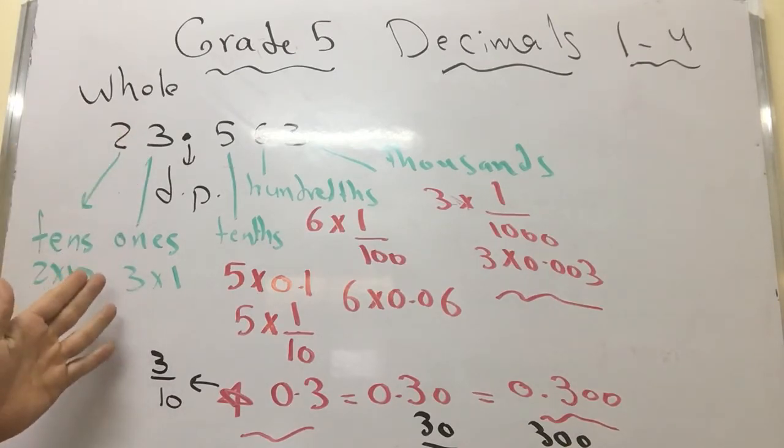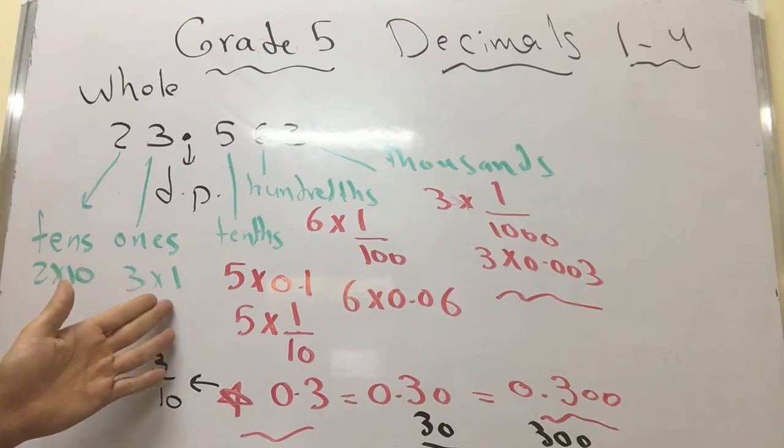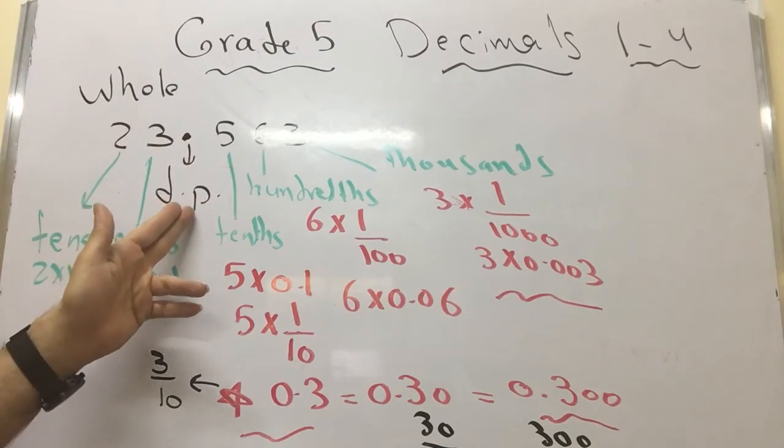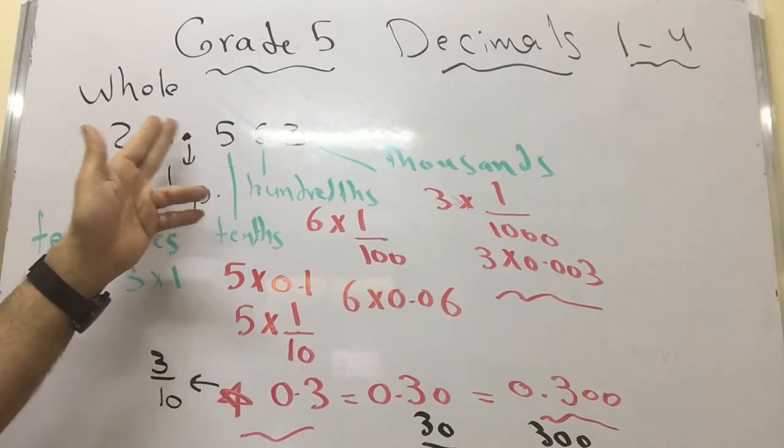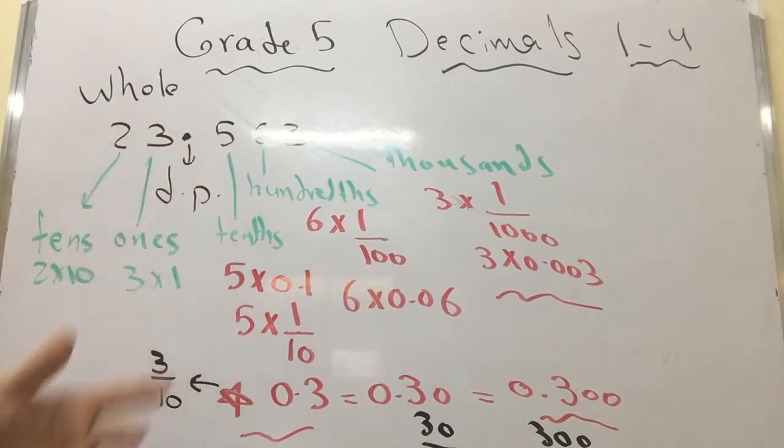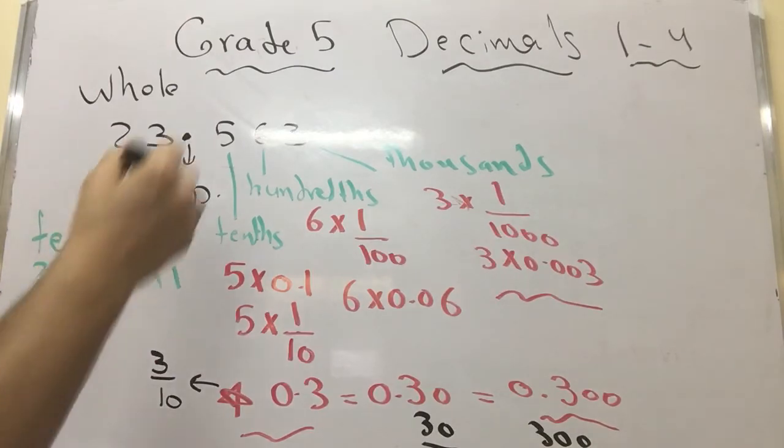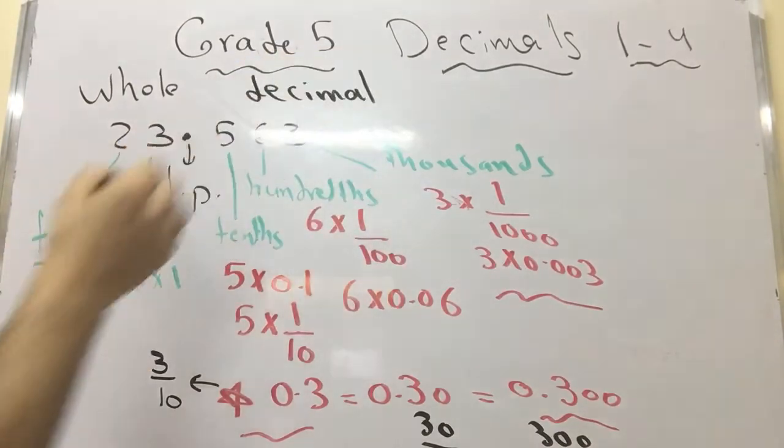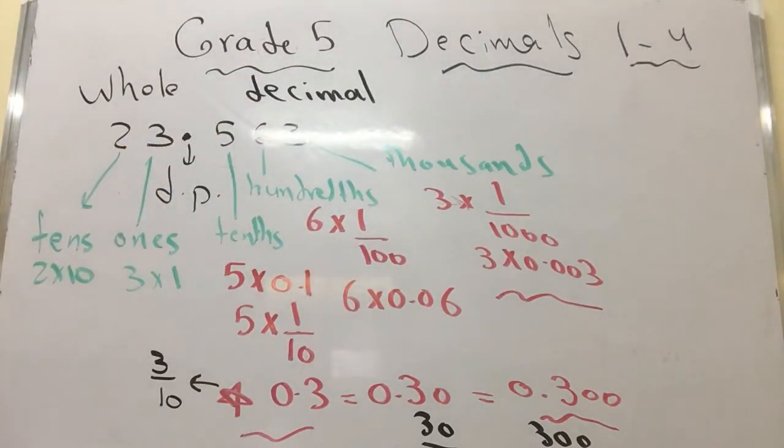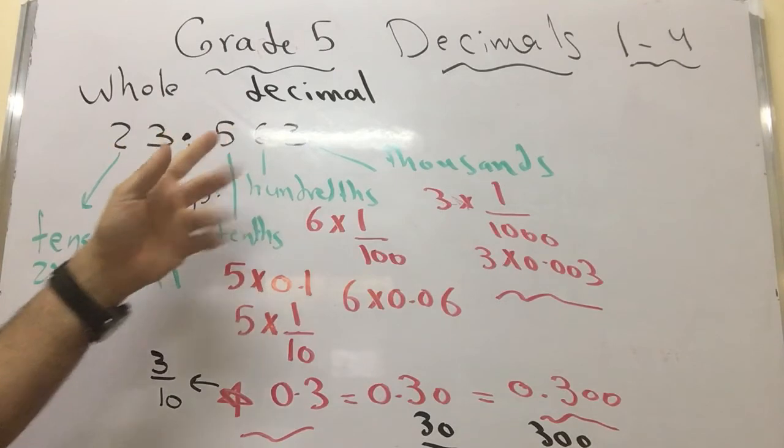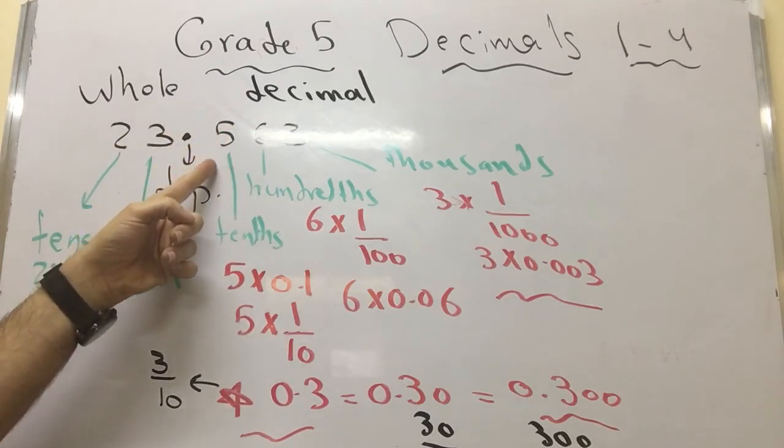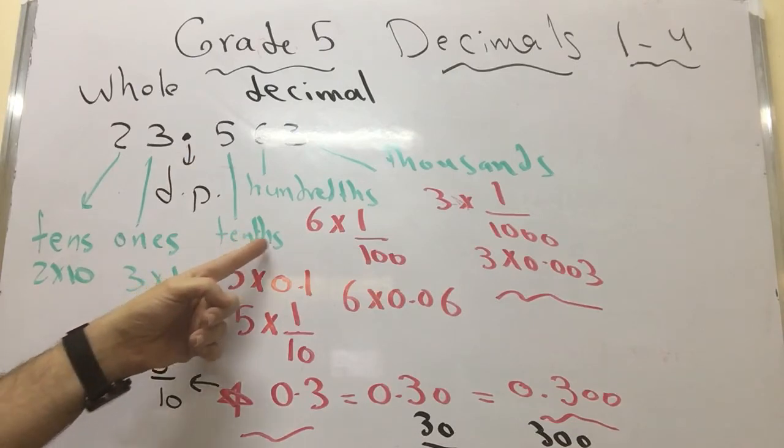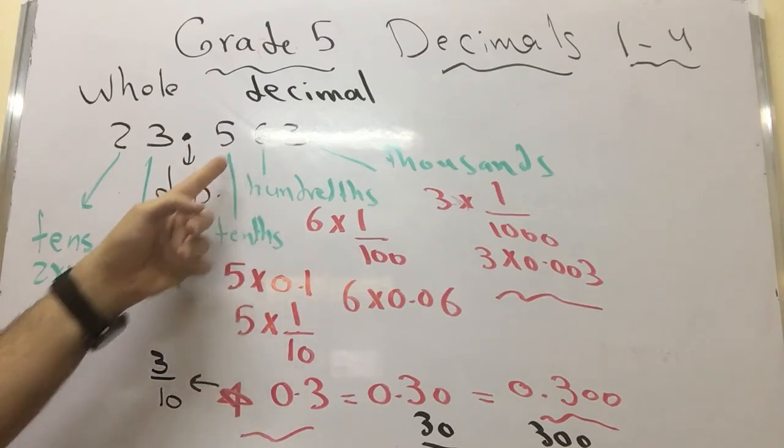Now here we have a decimal point. It's separating the whole portion and the decimal portion. Now we start the decimal portion. Here we have 5, this is in the tenths place.